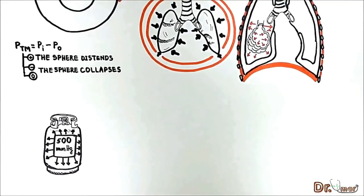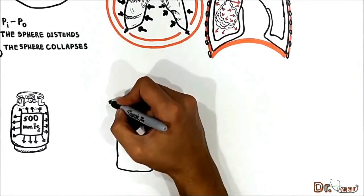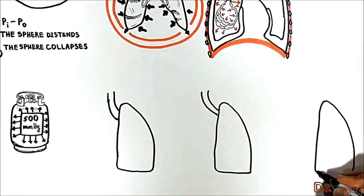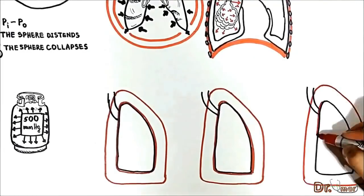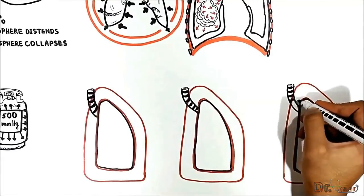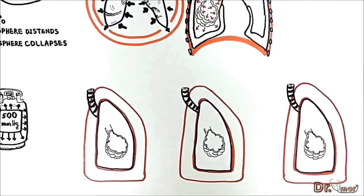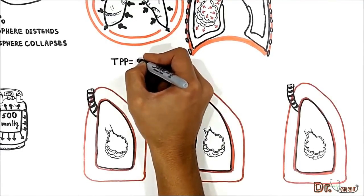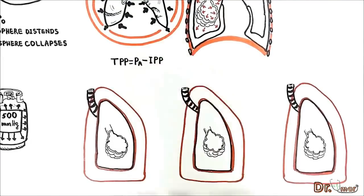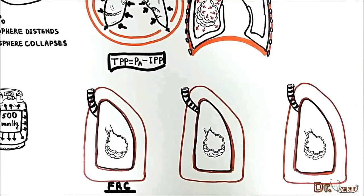Let me draw three lungs to explain how negative, positive, and zero transpulmonary pressure act on the lung's wall. Please note that I have enlarged the pleural space in the diagram. These are alveoli. Keep in mind this equation: transpulmonary pressure equals alveolar pressure minus intrapleural pressure.